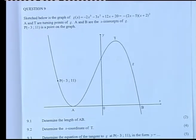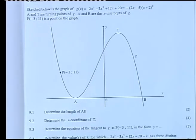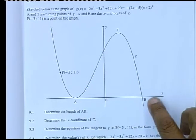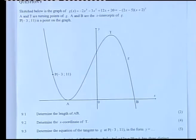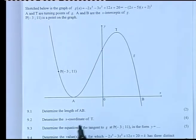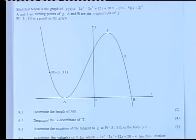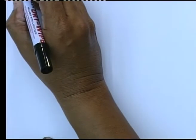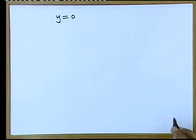Let's refer to question 9.1 where you are asked to determine the length of AB. Now let's quickly refer to points A and B. As you can see, point A and B are points referring to the x intercept, and hence one has to immediately think if you work with the x intercept that you are making the y value in that equation equal to 0.